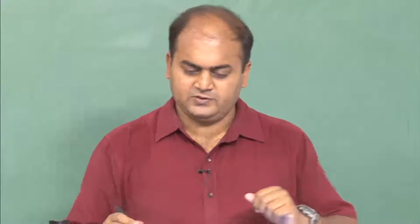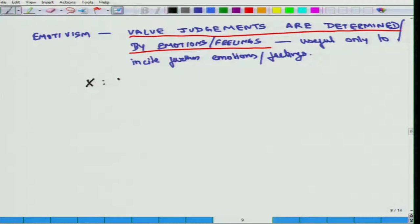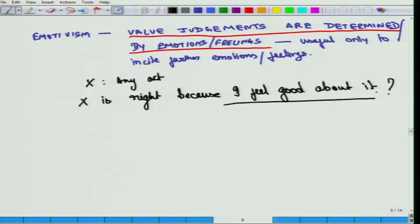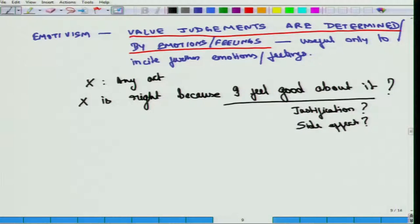Take a look at the question. If X is any act and X is right because I feel good about it — would you consider this a justification for the act being good? Or many of us would consider that it is a side effect of the right act. That is, I do something good — X is right not because I feel good about it, but X is right, therefore I feel good about it.